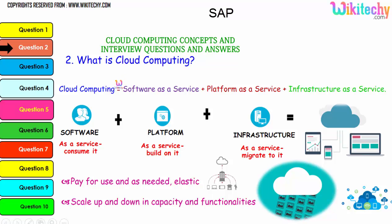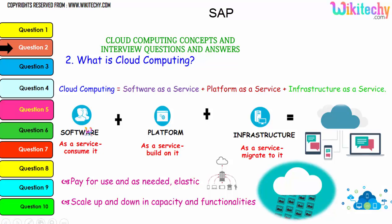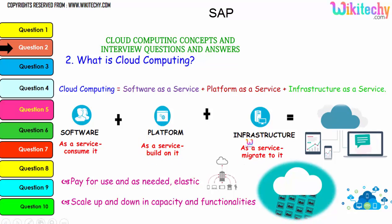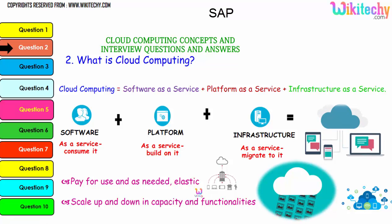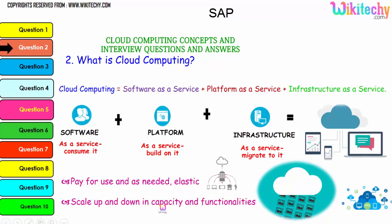Cloud computing is nothing but software as a service, platform as a service, and infrastructure as a service. The collaboration of software, platform, and infrastructure is referred to as cloud computing. A major advantage is elastic storage — if you need minimal storage, pay for that; if you need bigger storage, pay for that. You can scale up and down in capacity and functionality. That's a major advantage of cloud computing.